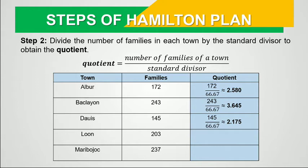In Luon, 203 divided by 66.67 is approximately 3.045. And in Maribohok, 237 divided by 66.67 is approximately 3.555. Again, we are limiting our quotients to three decimal places only for convenience.